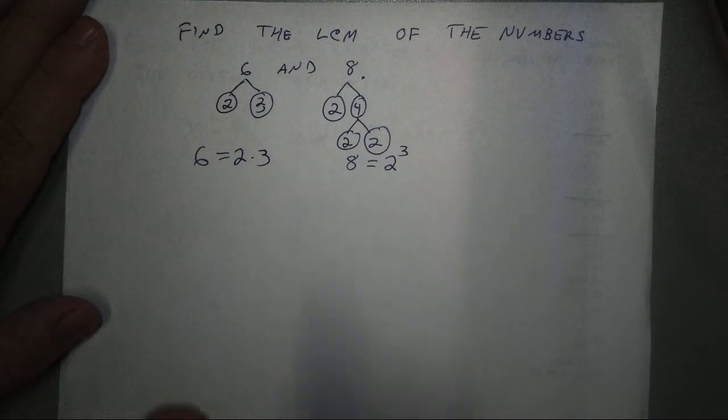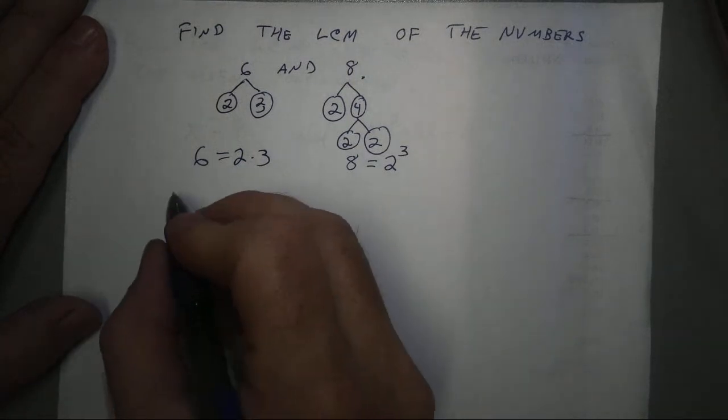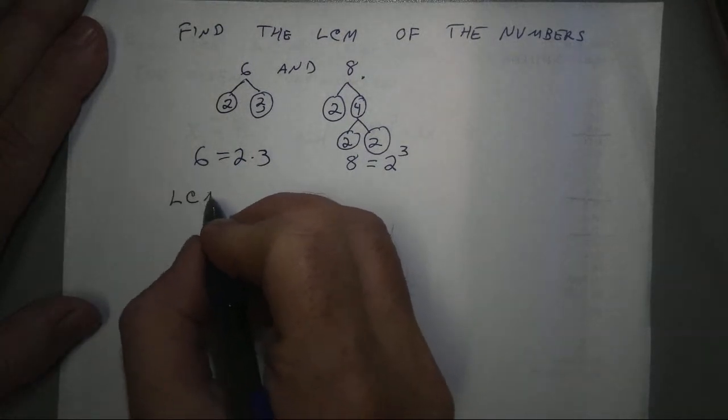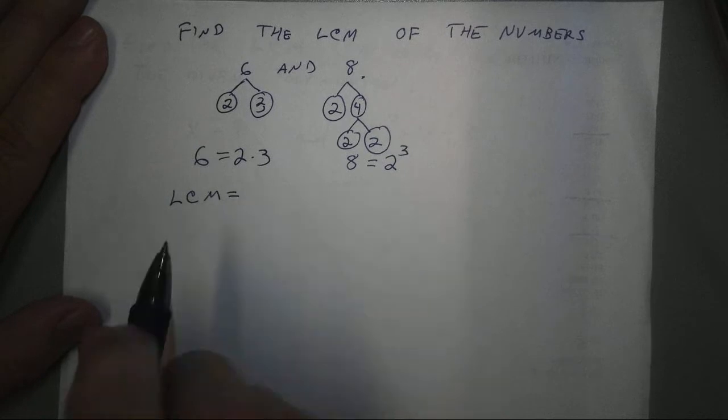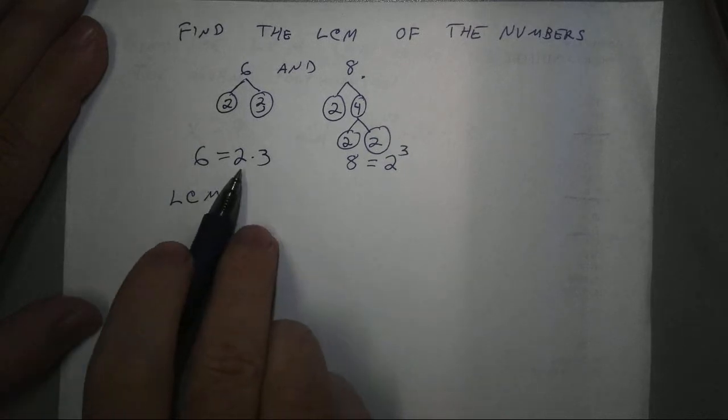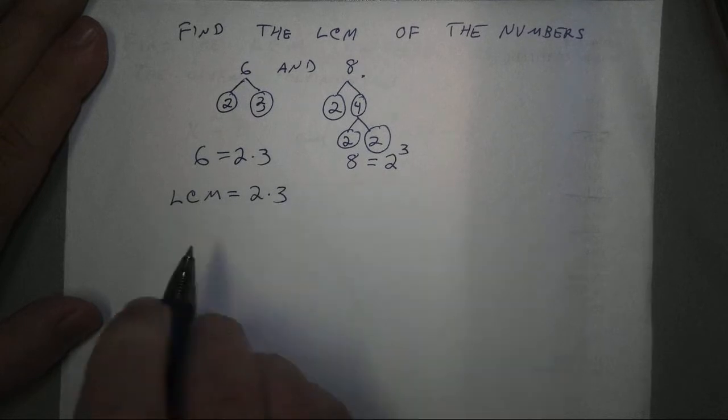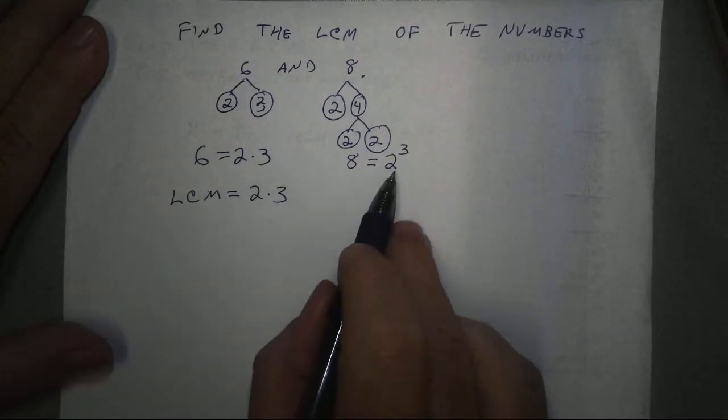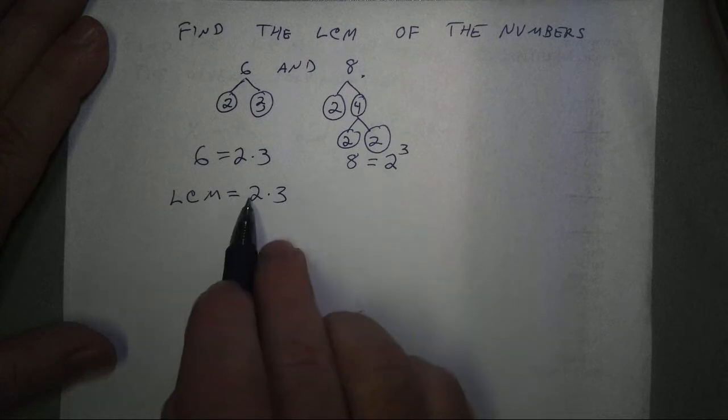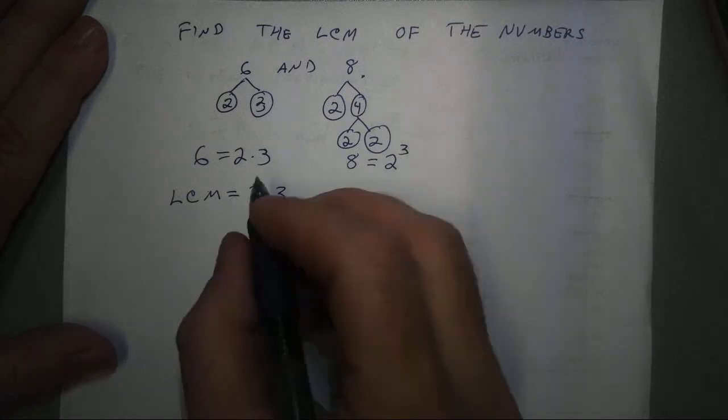To find the least common multiple, you start with 1, because it needs to be a multiple of the first one. So, I need a 2 and I need a 3. And then, when you come to the second number, I need... I have one 2, but I need two more 2s.